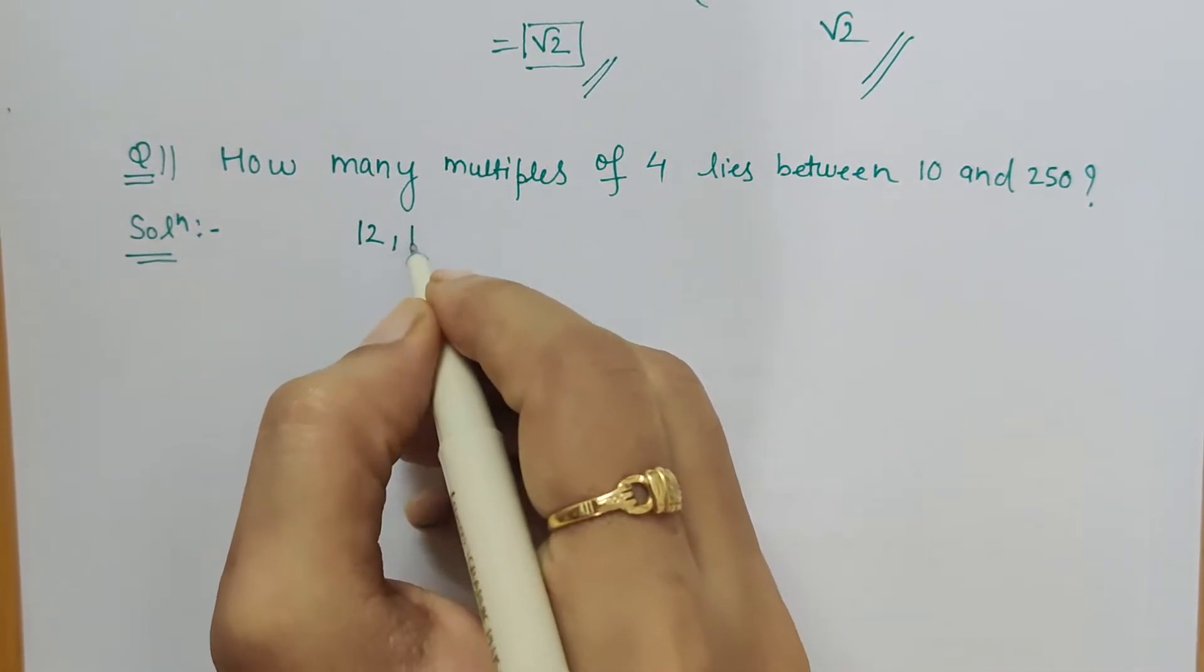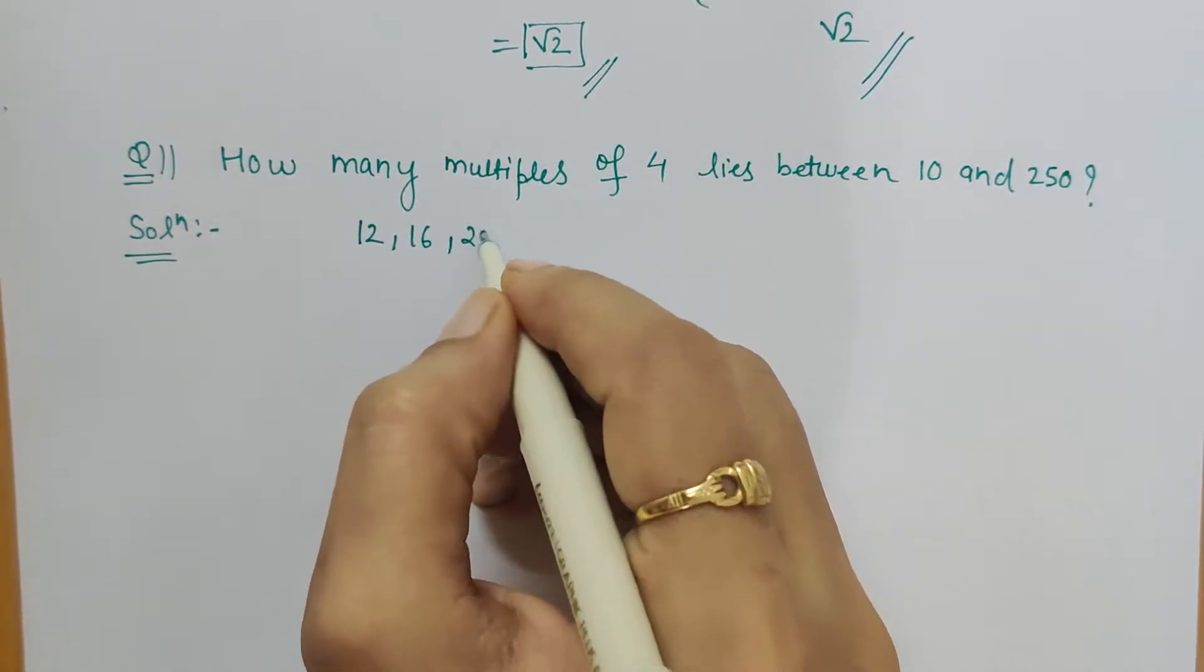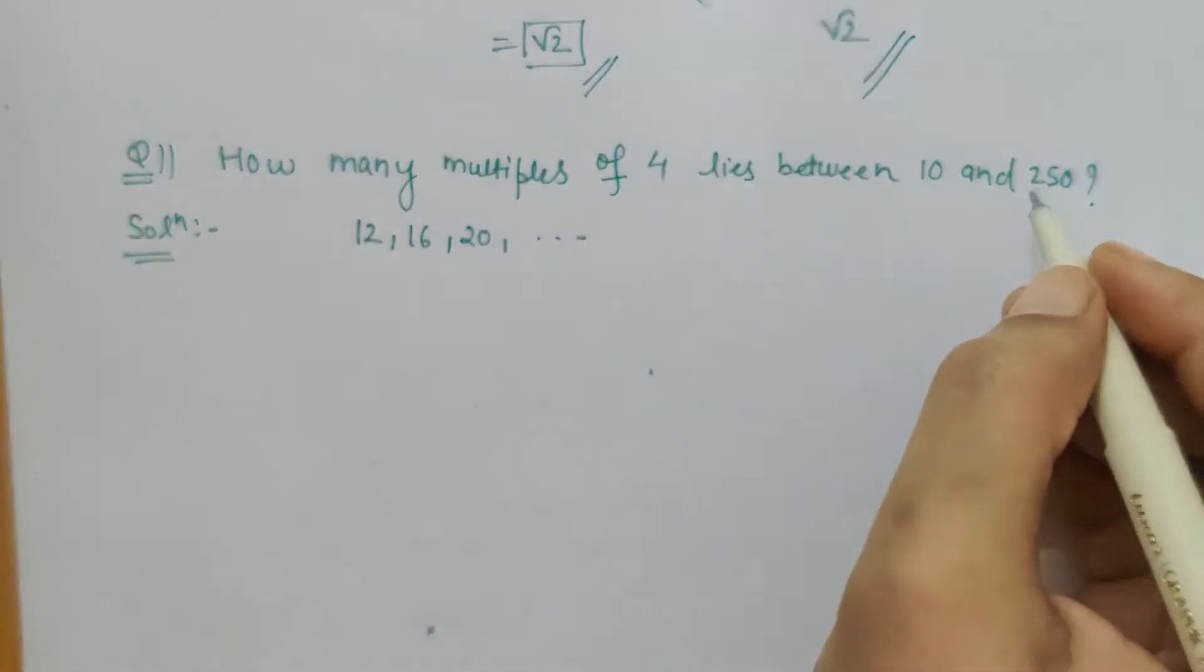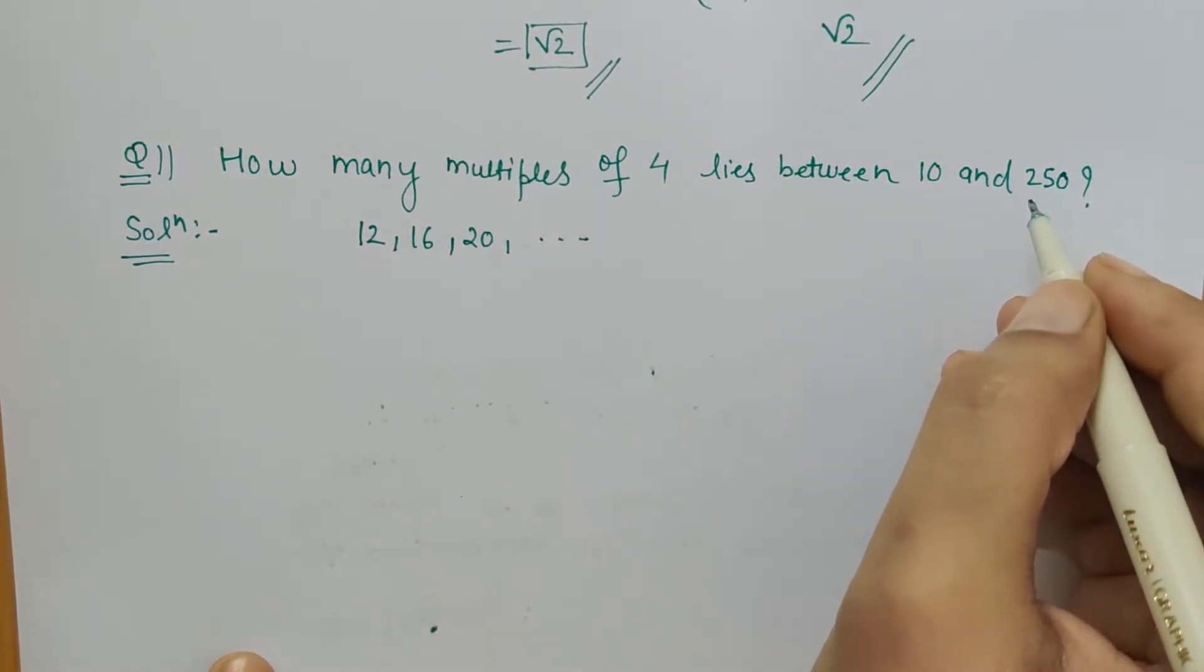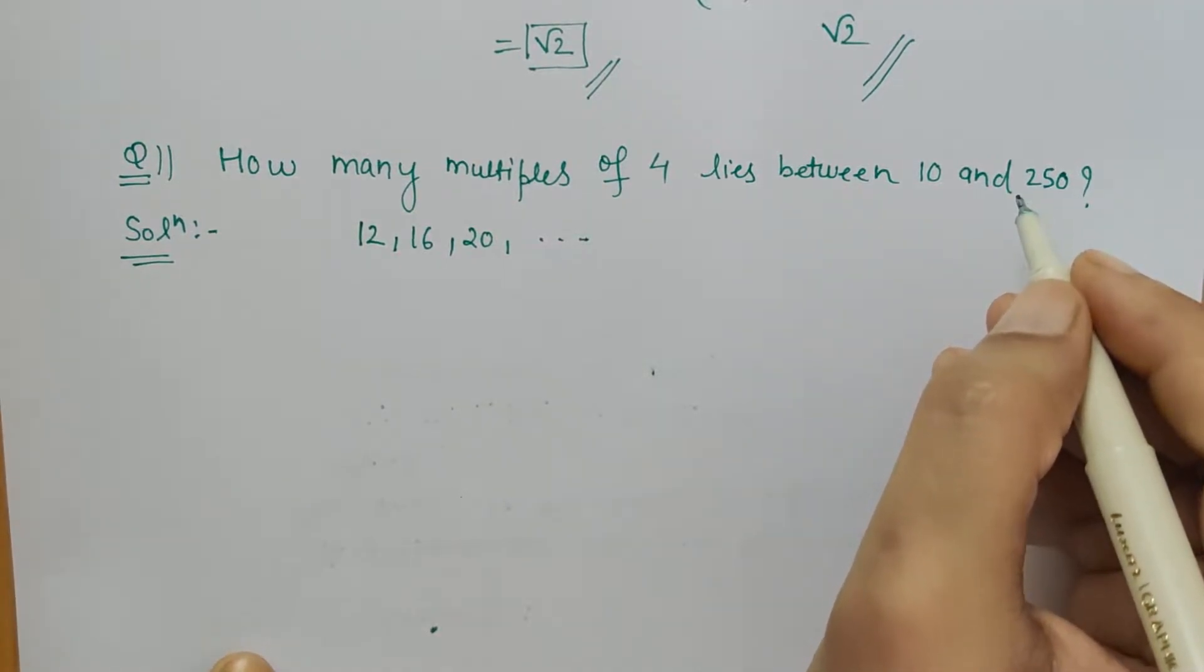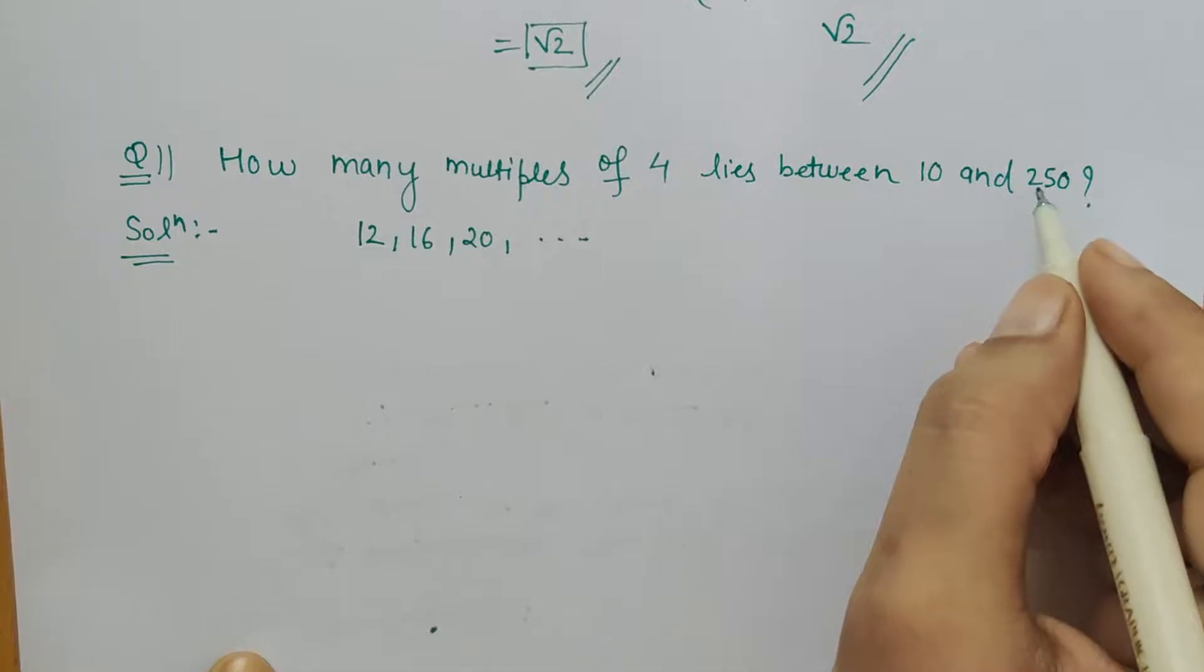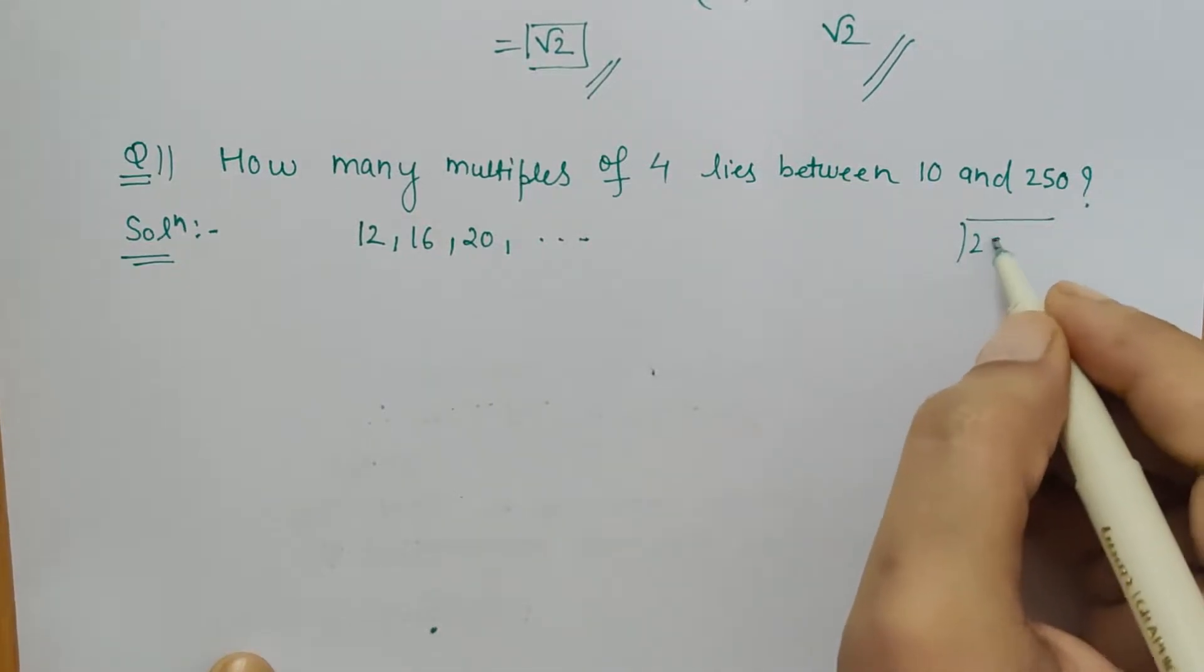After that, 16, then 20, and so on. The last number given to us is 250, but is 250 divisible by 4? No, it is not. So what will be the last digit just before 250 which is divisible by 4? For that, we have to divide 250 by 4.